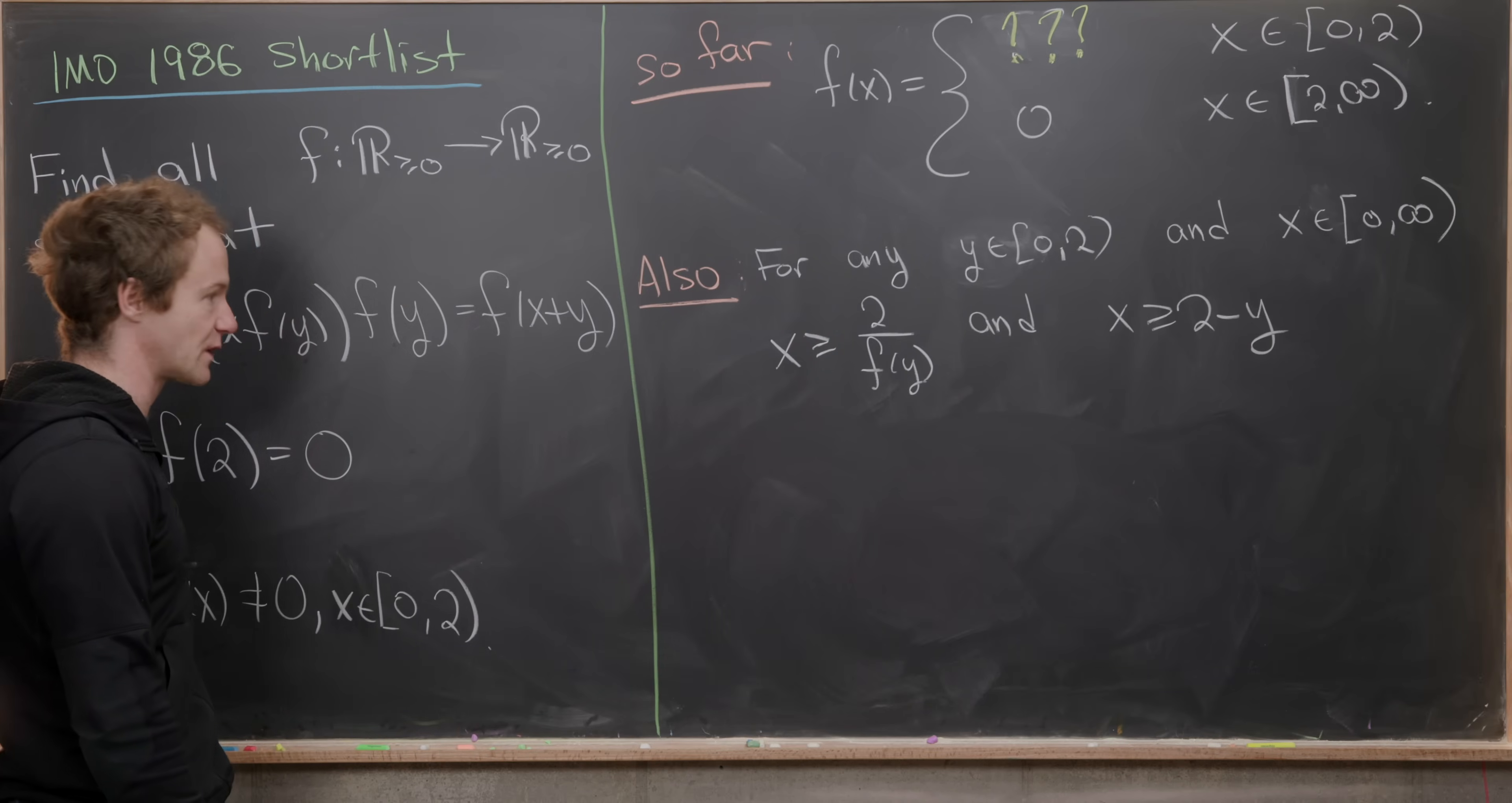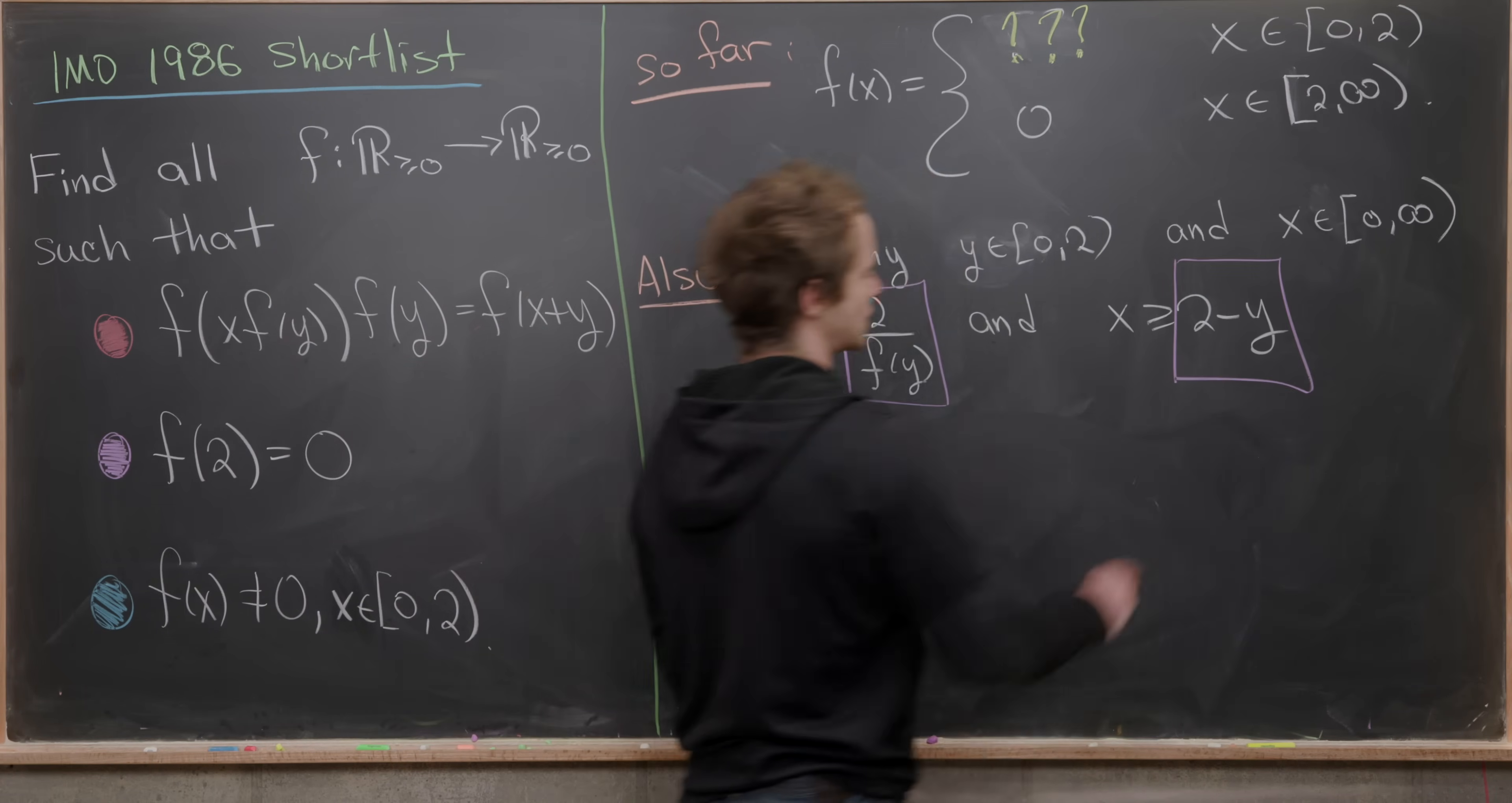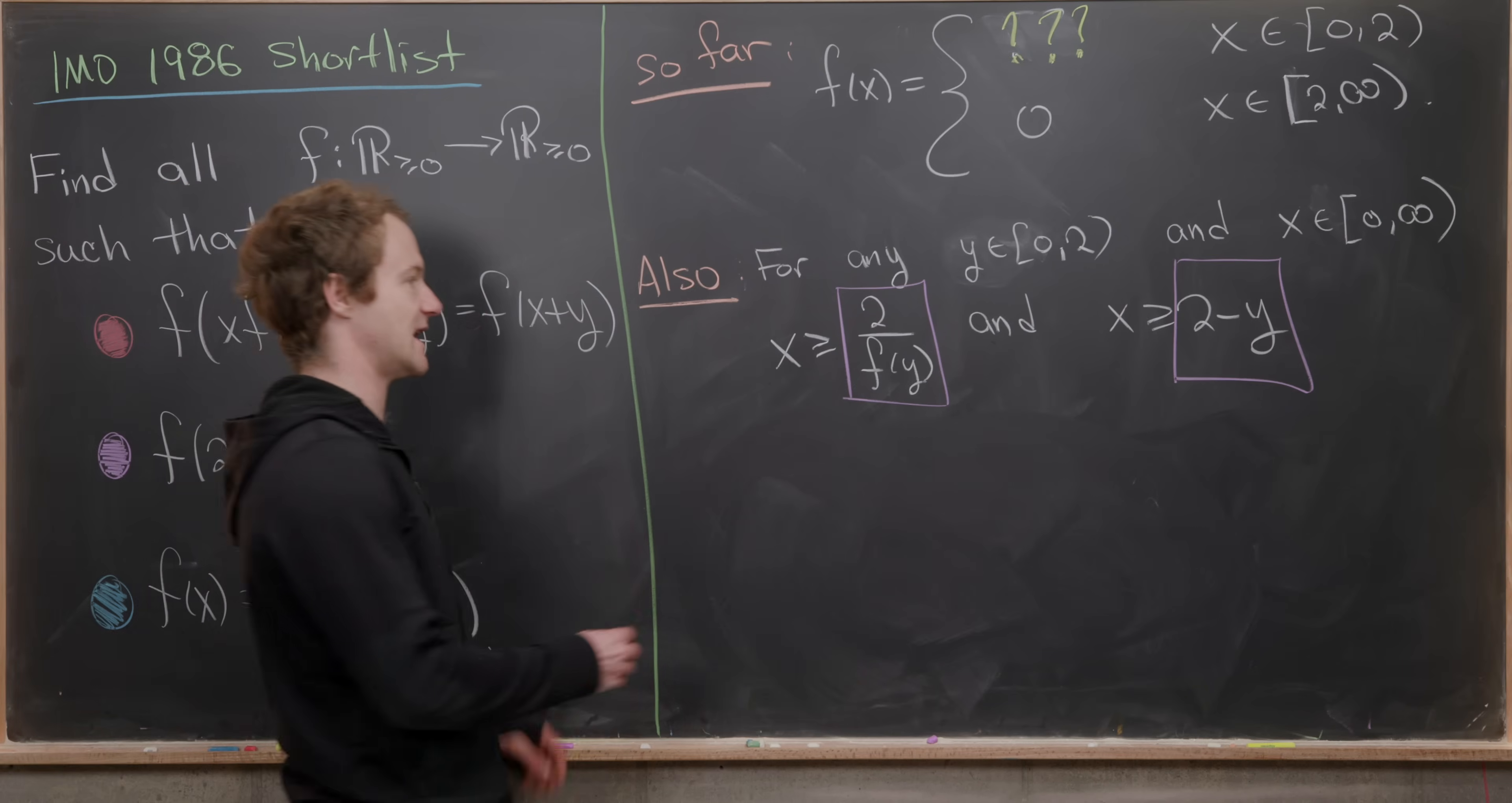But now here's where the trick comes in. The fact that these two inequalities both hold for all of these x and y values means that these two guys that I'm squaring in purple have to be the same. That's because x is bigger than or equal to this purple box, and it's bigger than or equal to that purple box. For all of these values of x and y, that means those two purple boxes are the same.